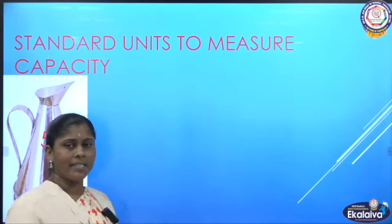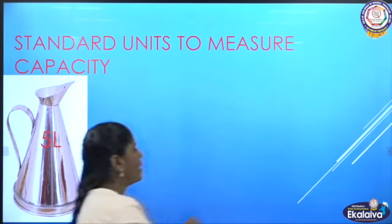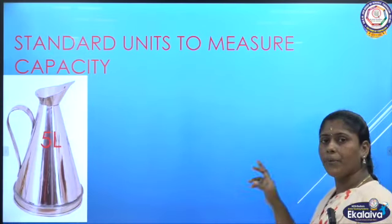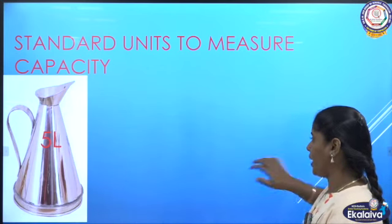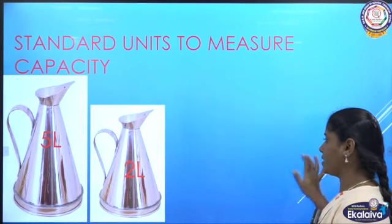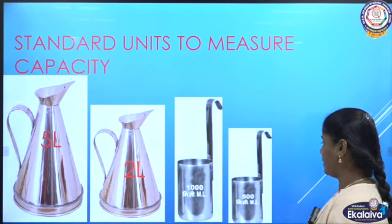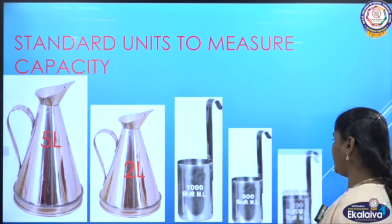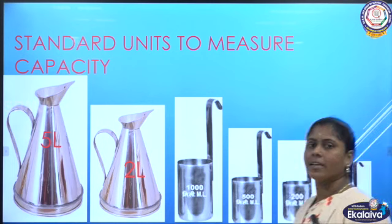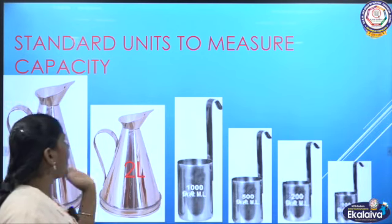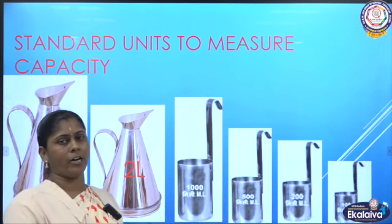These are the standard units used to measure the capacity of liquids and they are approved by the government. Here is a 5-litre container, a 2-litre container, a 1-litre container, a 500-millilitre container, a 200-millilitre container, and a 100-millilitre container.